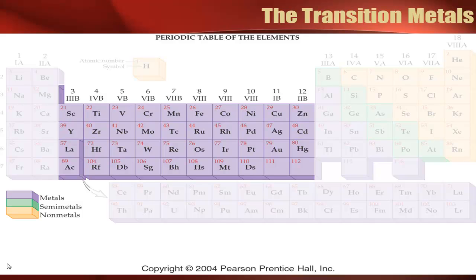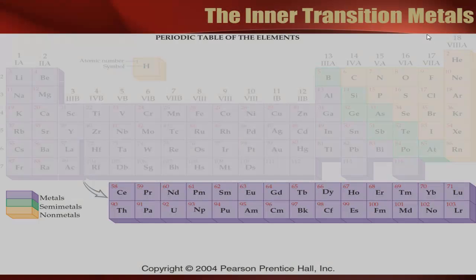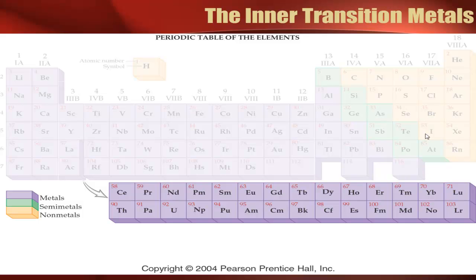Your transition metals are the valley in the middle of the periodic table — sometimes they're called Group B. All those elements in the middle, this entire valley, is called the transition metals. Down at the bottom, those two rows are called the inner transition metals because they squeeze inside the transition metals — they actually go right in there.